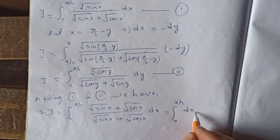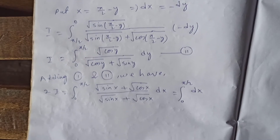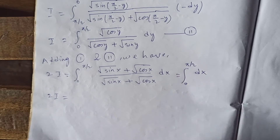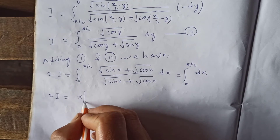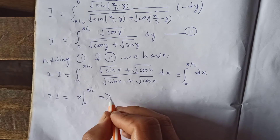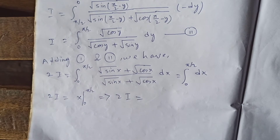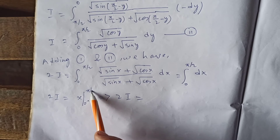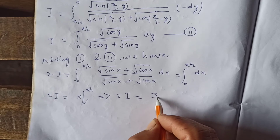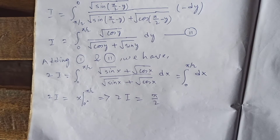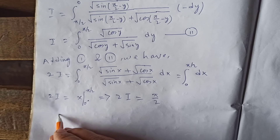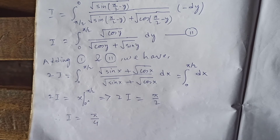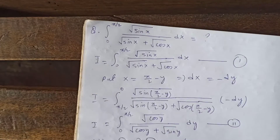The integral of dx from 0 to π/2 is just x evaluated from 0 to π/2. Plugging in: π/2 − 0 = π/2. So 2I = π/2, which gives I = π/4.